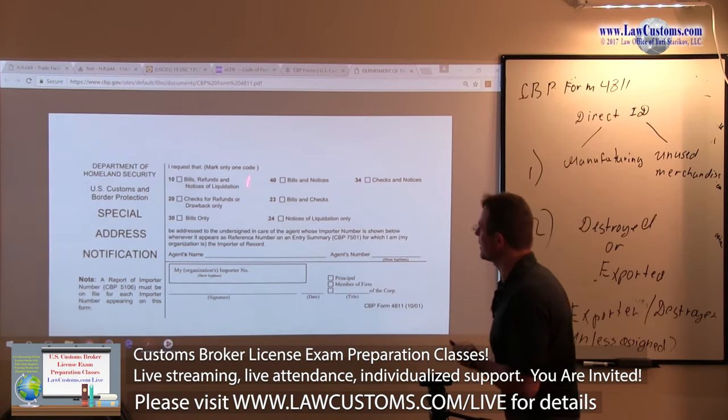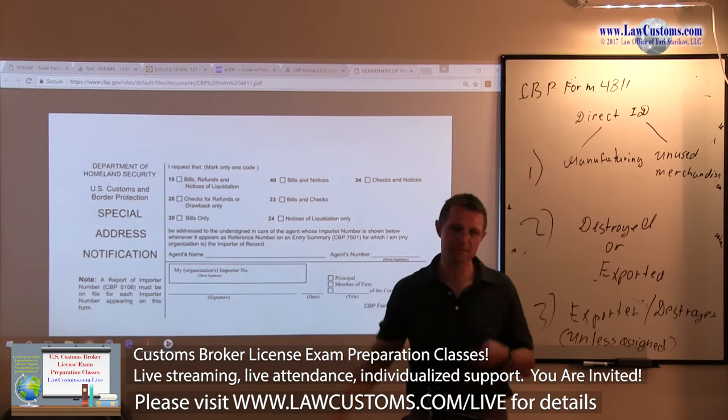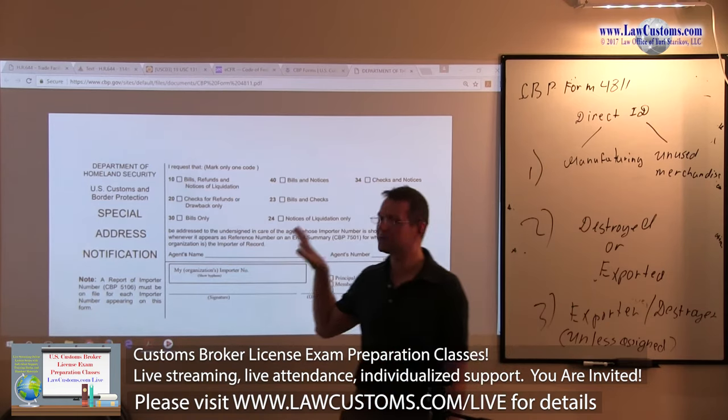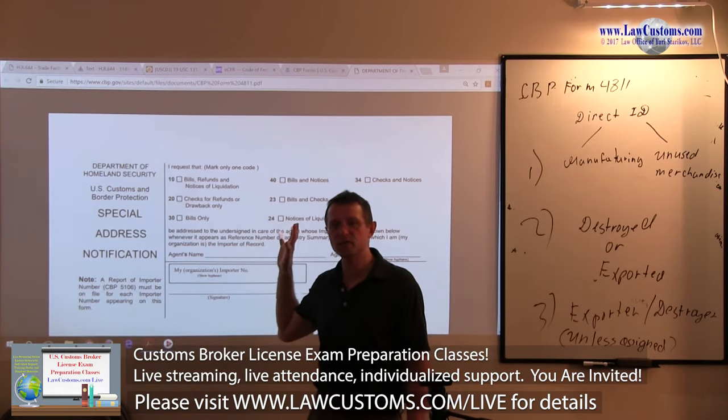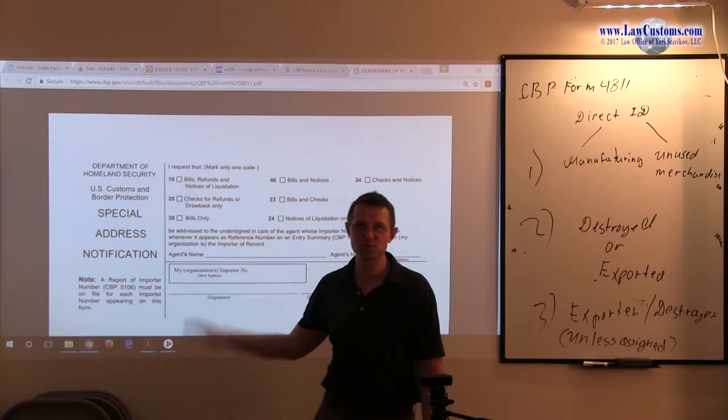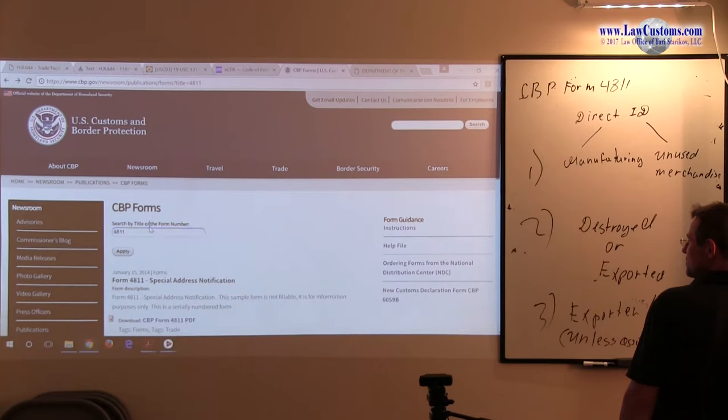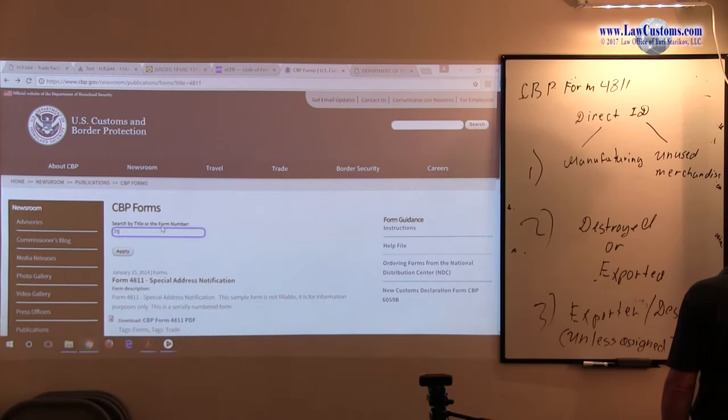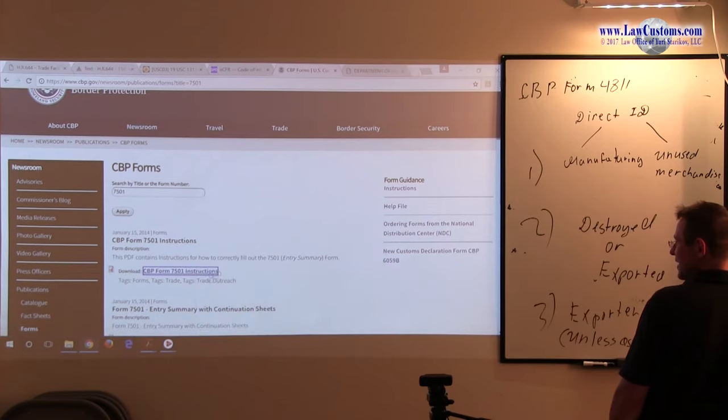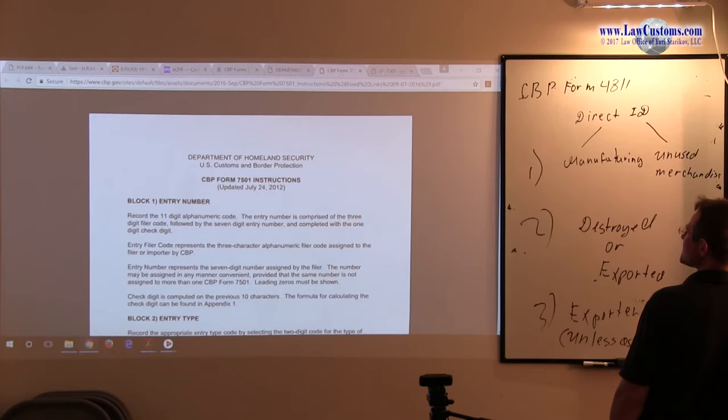This means you're outsourcing it to a third party. Since customs is dealing with the importer of record or licensed customs broker and that third party shows up, customs established a procedure saying 'okay, we'll take that third party into consideration, however you must follow protocol, sign it, make it official so that party is part of the game.' How does that party become part of the game? It can be easily seen through CBP form 7501, the entry summary, which is very popular and will be tested on the customs broker exam.